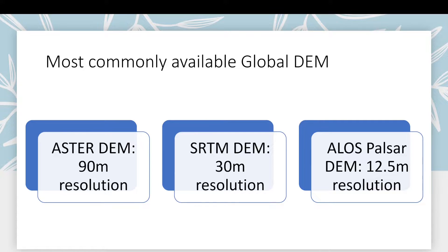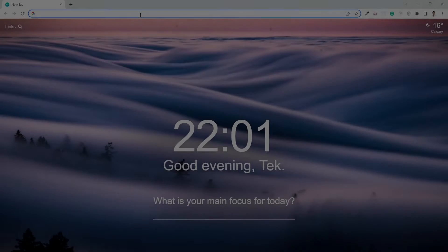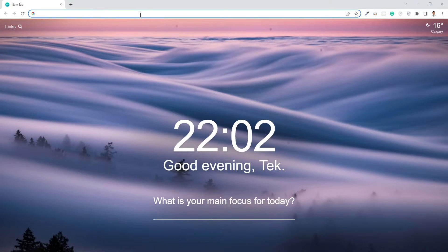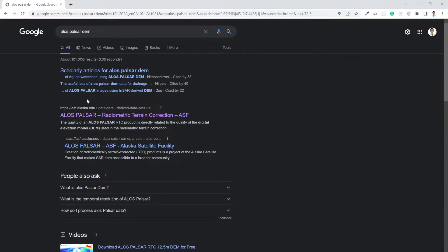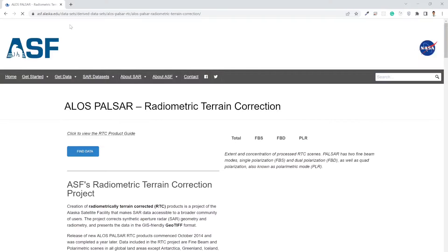For both datasets you need to create an account in USGS Earth Explorer, then just select the option and download. For today's video, I am going to download the ALOS PALSAR DEM, which is 12.5-meter resolution — the highest resolution dataset that is freely available. To download this, let's move to the browser. You can simply search for ALOS PALSAR DEM and click on the first link.